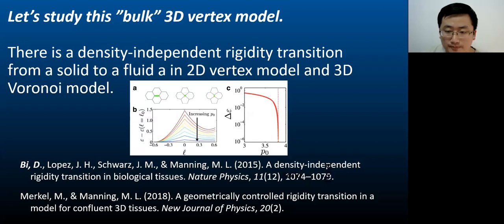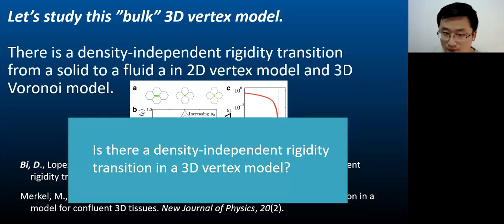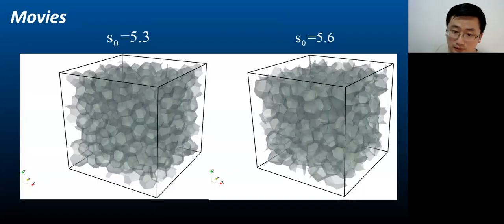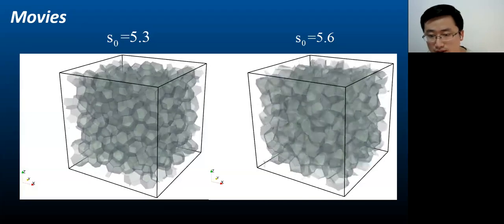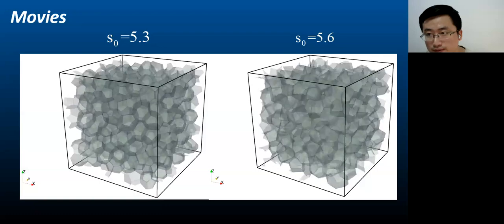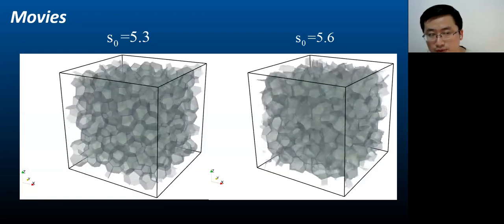Let's first study a bulk vertex model. There are no gaps between cells and the packing fraction is fixed at one. Prior work has found a density independent rigidity transition in 2D vertex model and a 3D Voronoi model. We will use the same form of the energy functional to ask whether or not there exists a related transition in 3D vertex model. As for the bulk case simulations, the initial state is created using a 3D Voronoi tessellation given randomized cell centers and assuming periodic boundary conditions.